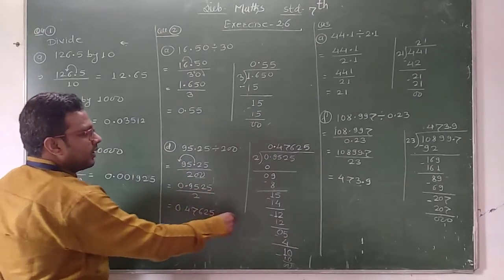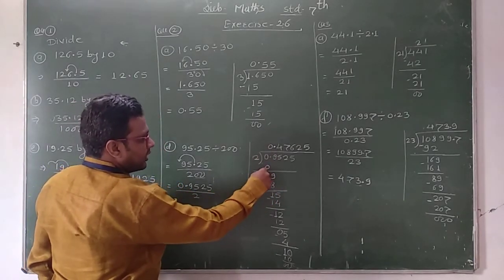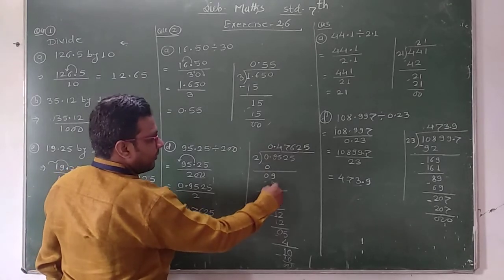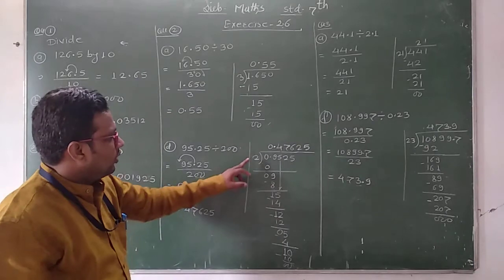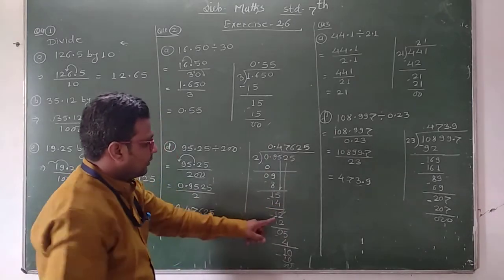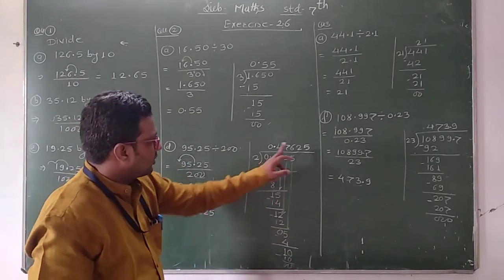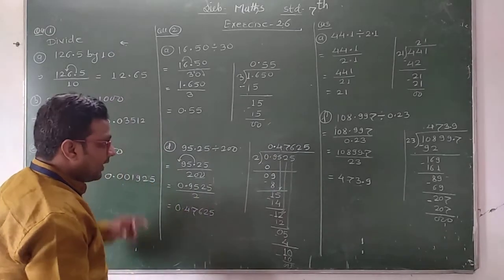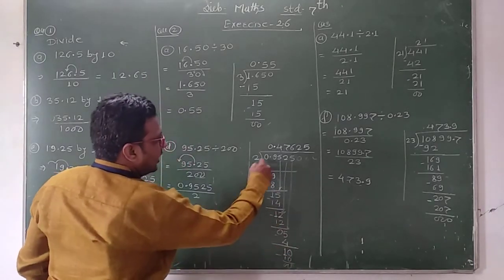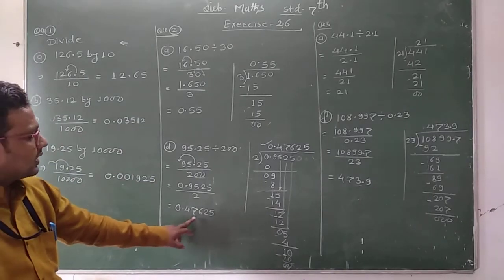Now we divide 0.9525 by 2. Zero is not divisible by 2, so we get 0. Then we take the decimal point. Next digit is 9: 2 fours are 8, remainder 1. Then we take the next number — 15: 2 sevens are 14, remainder 1. Then we take the next digit 2, becoming 12: 2 sixes are 12, remainder 0. Then next digit 5: 2 twos are 4, remainder 1. After that we take 0: 2 fives are 10. Division is complete. The answer is 0.47625.